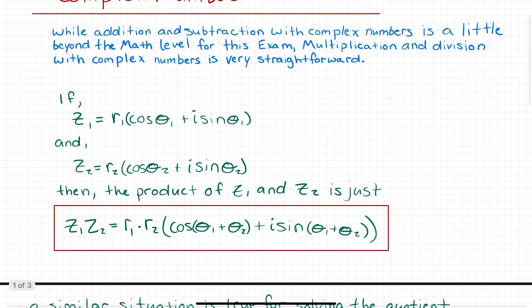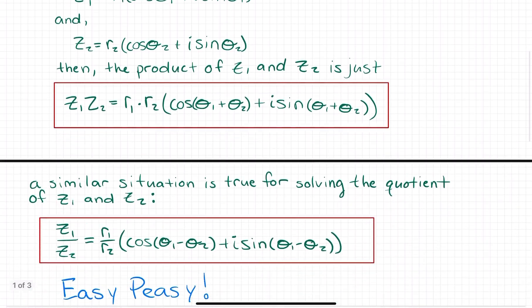Let's assume that we also have a second complex number in polar form. We're going to call it z2, defined by r2 times cosine theta 2 plus i sine theta 2, just to denote that we're talking about different numbers. Then the product of z1 and z2 is simply r1 times r2 times the quantity cosine of (theta 1 plus theta 2) plus i sine (theta 1 plus theta 2).